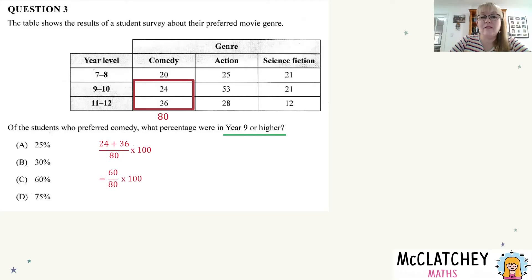The next step: adding those two numbers together gives us 60. So 60 out of 80 times 100 gives us 75%, and we can jump straight in and pick D.